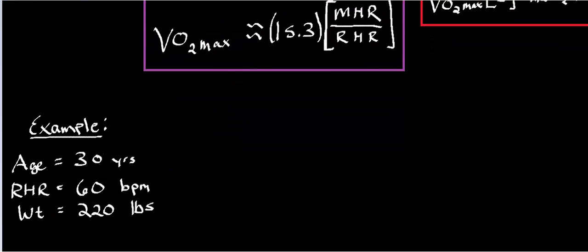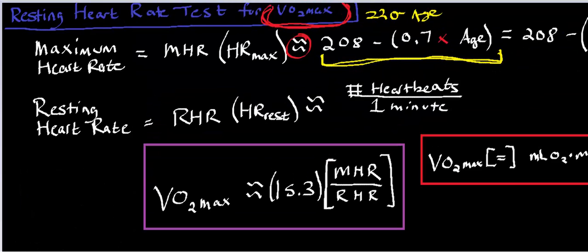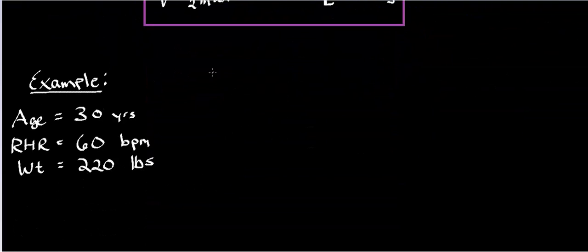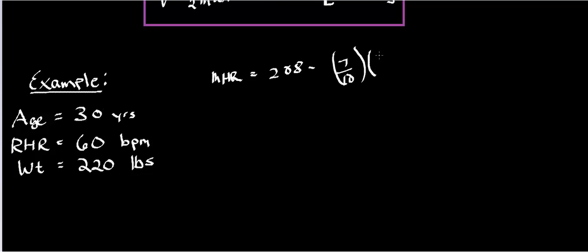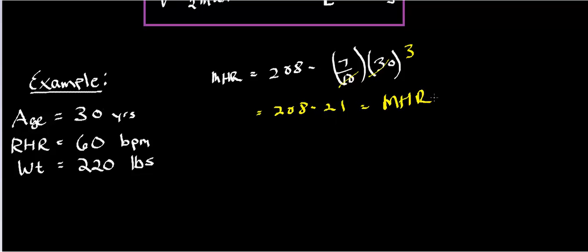Let's go ahead and do that with the example. The maximum heart rate is approximately 208 minus 0.7 times the person's age, which in this case is 30 years. We can simplify: 10 cancels with 30 to give 3, so this becomes 208 minus 7 times 3, which is 21. So 8 minus 1 is 7, and 20 minus 2 is 18 — giving us a maximum heart rate of 187 beats per minute.